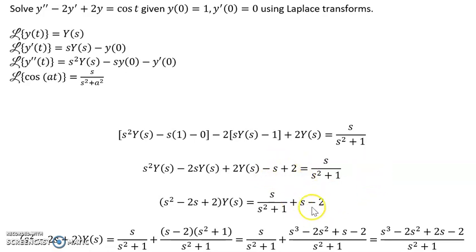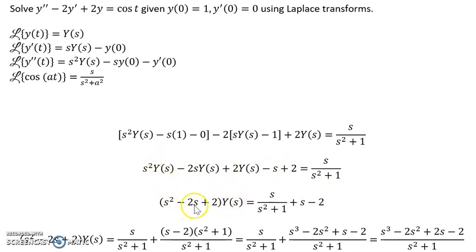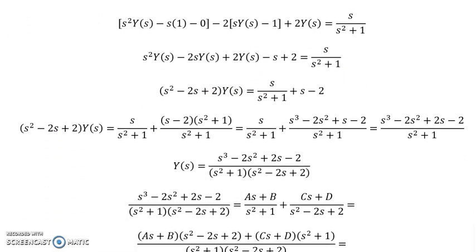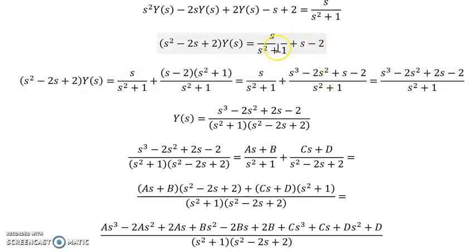Negative 2 times negative 1 gives positive 2. We move these terms to the other side of the equation by adding s and negative 2 to both sides, then factor out Y(s) to get a polynomial — which is of course our characteristic polynomial.